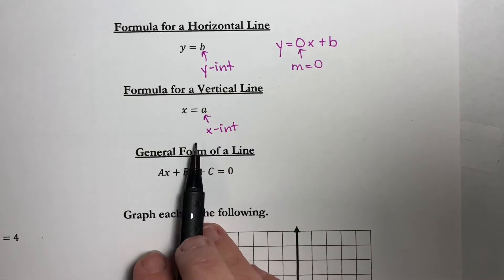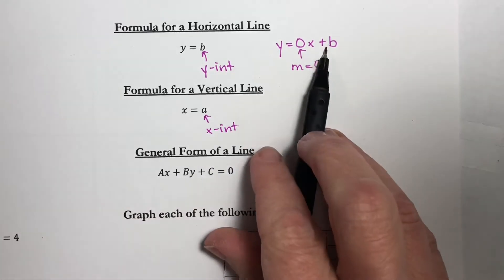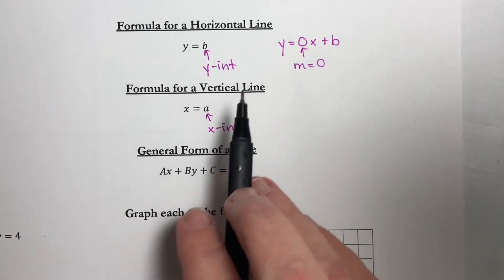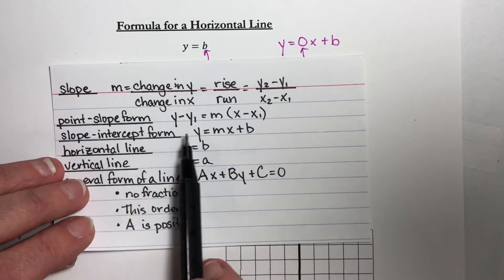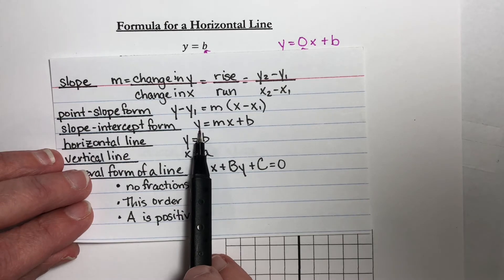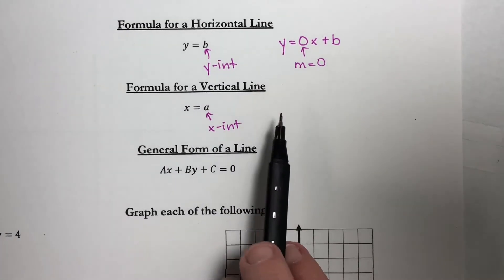There is no way for us to rewrite this in this form, because to be in slope-intercept form, we have to be able to solve for y. And we don't have a y, so we can't do that.